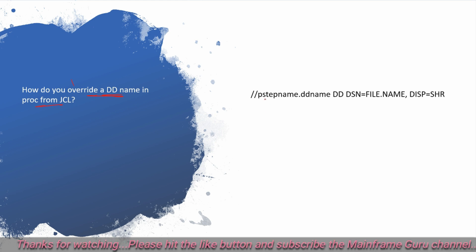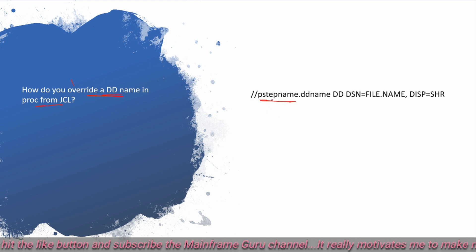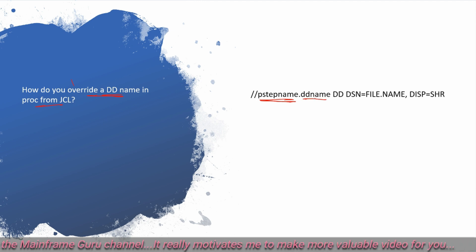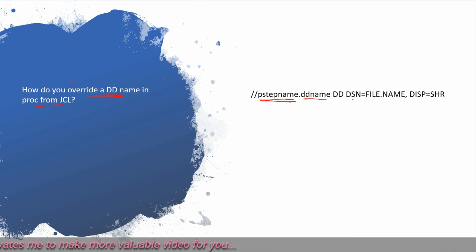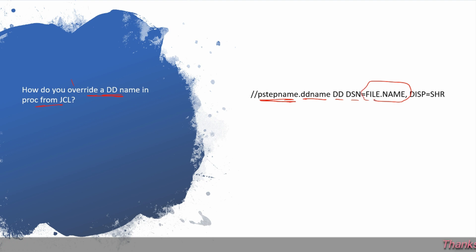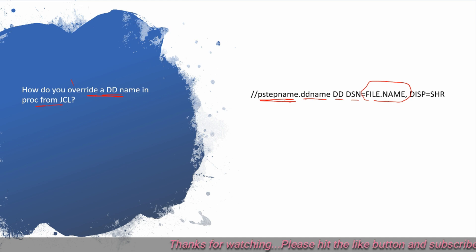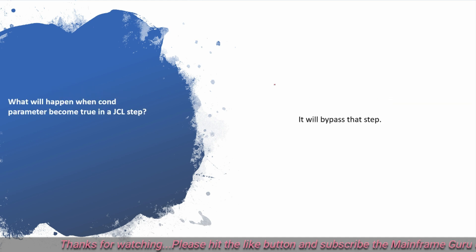How do you override a DD in a PROC from JCL? First you need to give the PROC step name, then specify which DD statement from the PROC step you want to replace, then provide the DD DSN and the filename with which you want to replace or override the file.